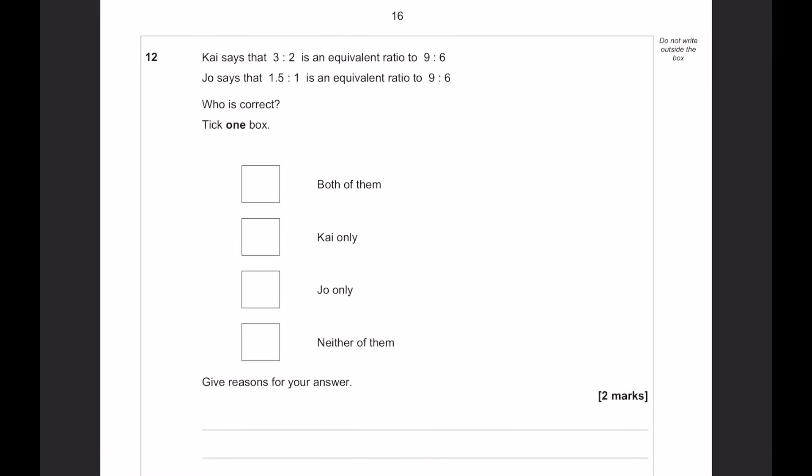Kai says that 3 to 2 is equivalent to 9 to 6. Joe says that 1.5 to 1 is equivalent to 9 to 6. Who is correct? Well, you can see that Joe's, 1.5 to 1, if you multiply both of those by 2, you're going to get 3 to 2 as well. And you can multiply both of those by 3 to get 9 to 6. So, in fact, both of them are correct, and here is my working result.